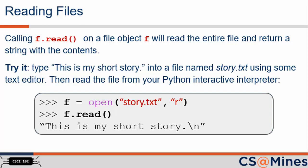That is, type this is my short story into a file named story.txt using some text editor. Then, read the file from Python's interactive interpreter. You should see it print whatever content you put in the story.txt file. We suggest you to try this exercise and then also think about what will happen if you call f.read a second time. Pause the video, create your story.txt file, and find out.